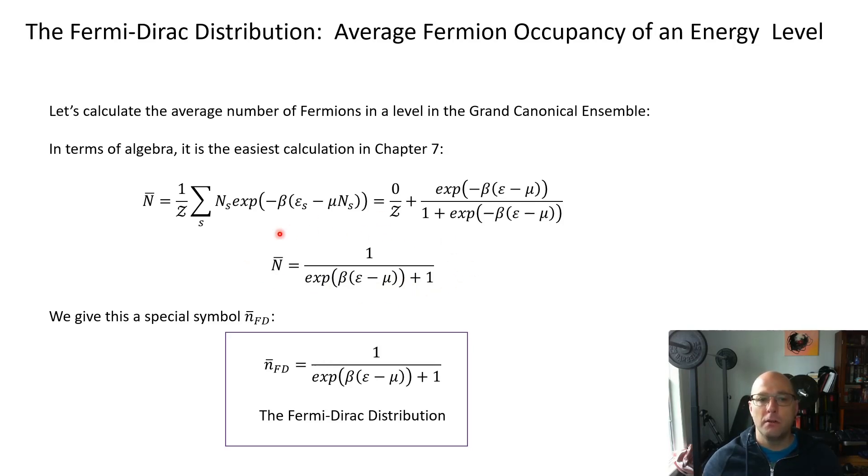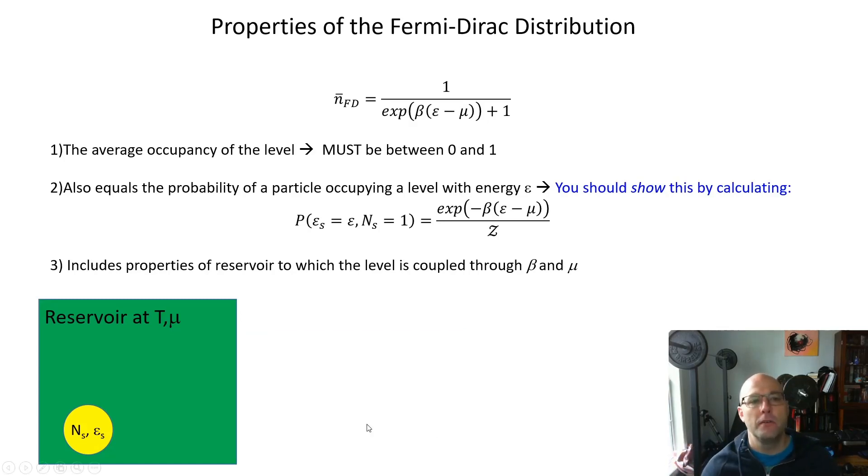We call this a special quantity in quantum statistical mechanics. This is an occupation function and we give it this special symbol little n̄_FD. Don't ask me why we switch to little n's, but that's the notation in the textbook. This is called the Fermi-Dirac distribution. Very important. If we were doing our class normally, this is one of the formulas that I would ask you to memorize for the exam. That's not relevant anymore because we're not doing in-class exams, but I'm just telling you so that you would know how important it is.